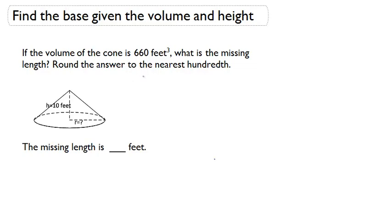So let's read the problem. If the volume of a cone is 660 cubic feet, what is the missing length? Round your answer to the nearest hundredth. I'm going to underline that because that's very important to know what we're rounding to.